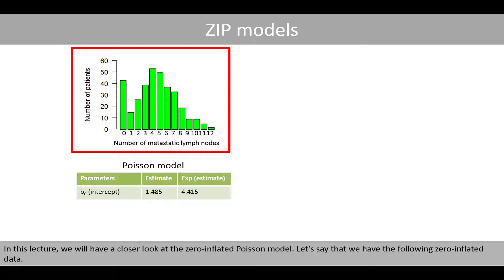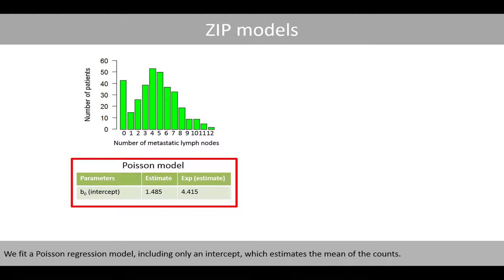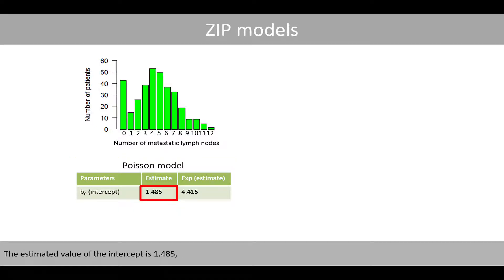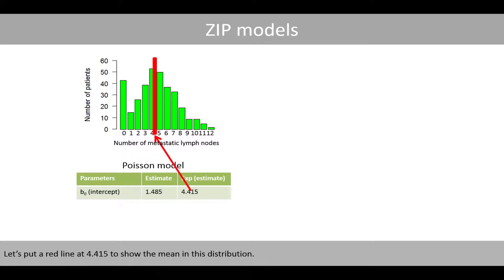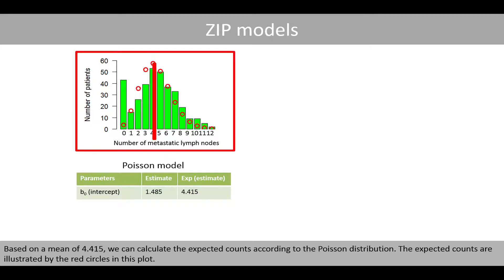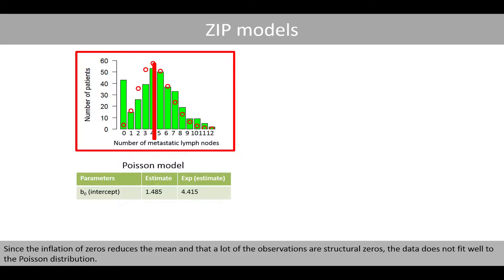Let's say that we have the following zero-inflated data. We fit the Poisson regression model including only an intercept, which estimates the mean of the counts. The estimated value of the intercept is 1.485, and e to the power of 1.485 is about 4.415, which is the estimated mean of the counts. Based on a mean of 4.415, we can calculate the expected counts according to a Poisson distribution. Since the inflation of zeros reduces the mean, and many observations are structural zeros, the data does not fit well with the Poisson distribution.